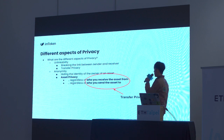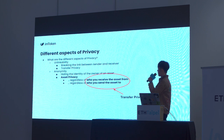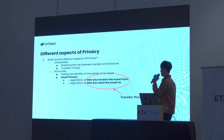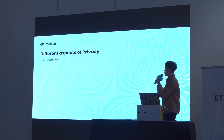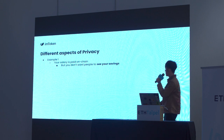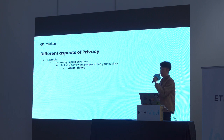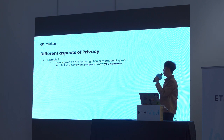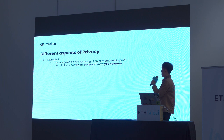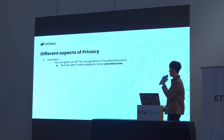One important thing: if you care about asset privacy, you care about hiding the identity of the owner of an asset, regardless of who you received it from or who you're sending it to — those are transfer privacy. Example one: your salary is paid on-chain but you don't want people to see your savings — that's asset privacy. Example two: you're given an NFT for recognition or as membership proof, but you don't want people to see that you have it — that's also asset privacy.